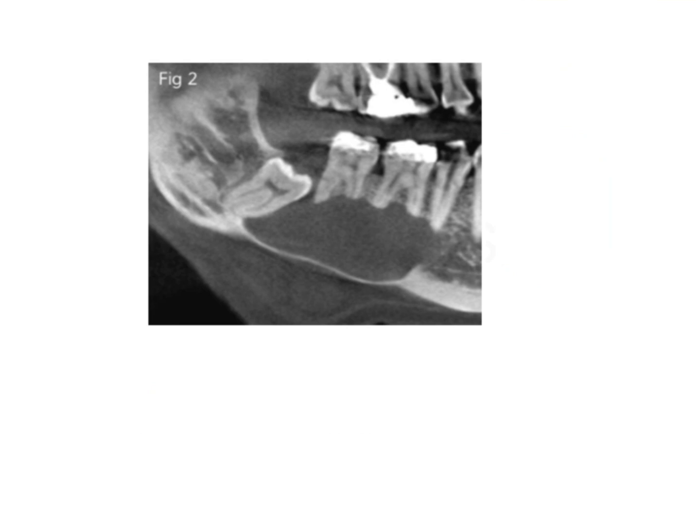Coming to this image, one more thing to remember: OKC has an anterior and posterior extension. It does not cause expansion in the buccal-lingual plane. The characteristic feature of OKC is that it causes an antero-posterior spread.